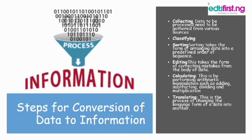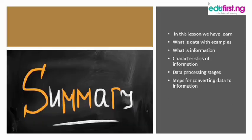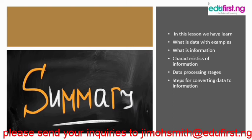Now let's do a recap. In this lesson we have learned: what is data with examples; what is information; what are the characteristics or qualities of information — information should be timely, accurate, and complete; the data processing stages — these are the input, the processing, and the output; and lastly, the steps for conversion of data into information.